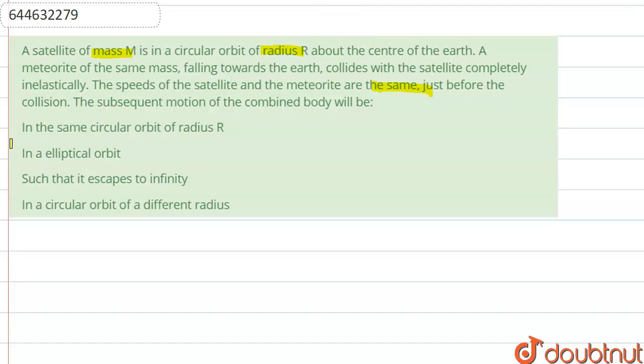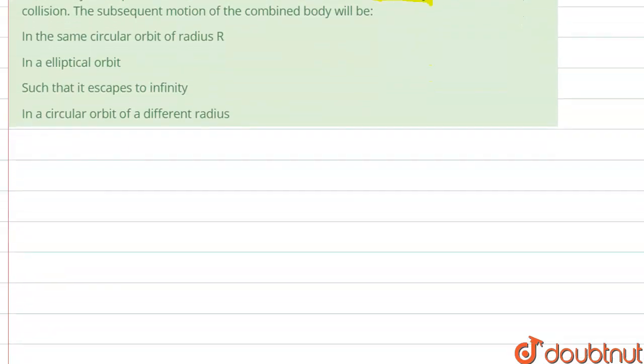So firstly, our satellite is moving in the circular orbit around the earth. Then its velocity v₀ equals √(GM/R). So this is its velocity and it is also the velocity of the material.